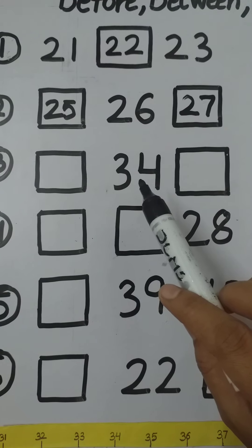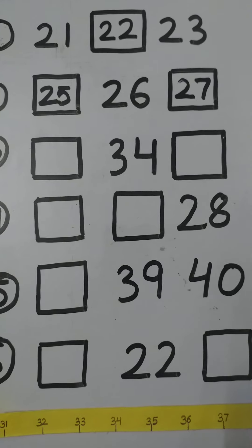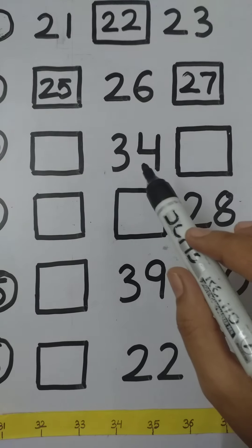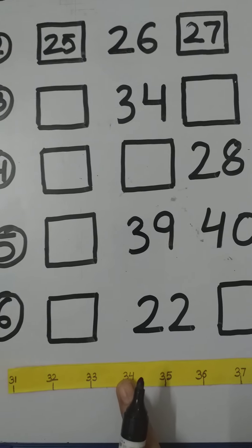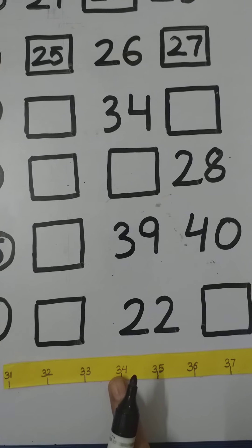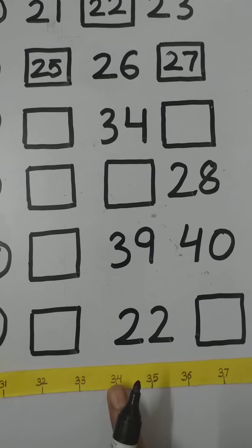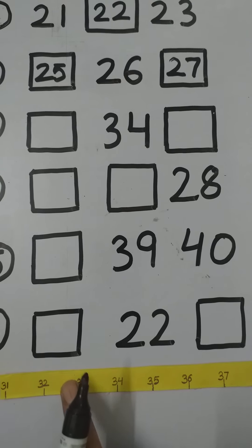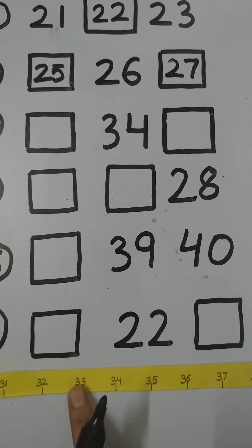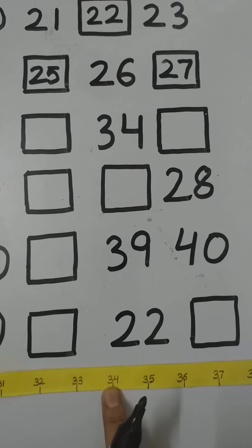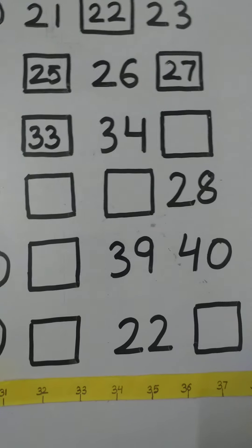Next is number 34. So children, what we have to do? We have to find what comes before 34 and what comes after 34. Let's find out. Where is number 34? Tell me children, what comes before 34? We have to move toward the left hand side. So 33. What comes before 34? 33. So we have to write here 33.